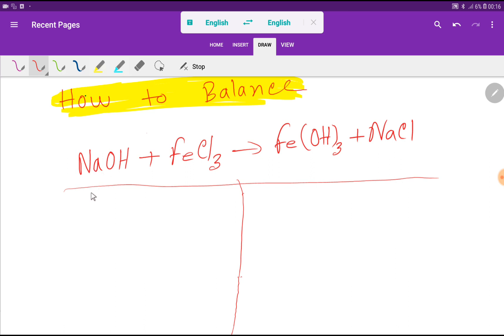So look at here. In the left hand side we have 1 sodium and here we have 1 hydroxide. And here we have 1 iron and here we have 3 chlorines.